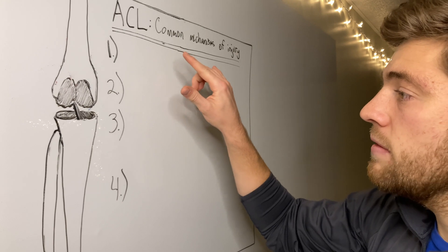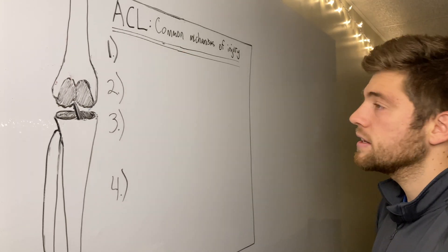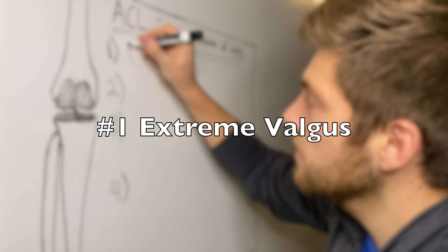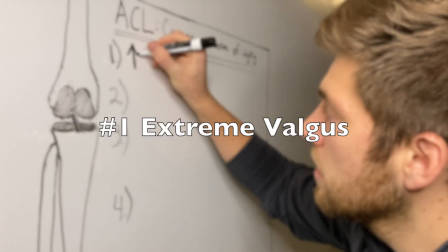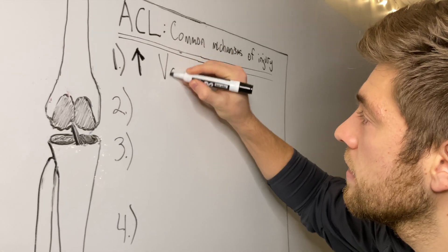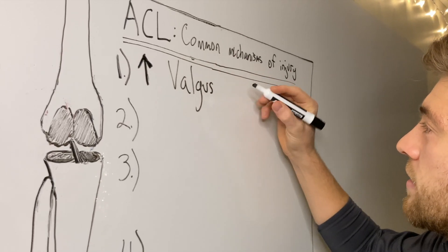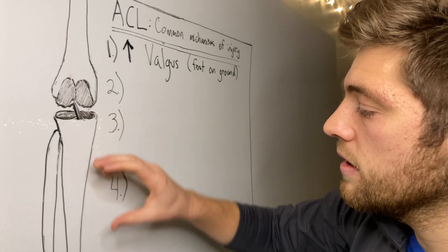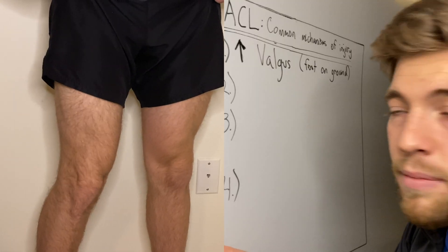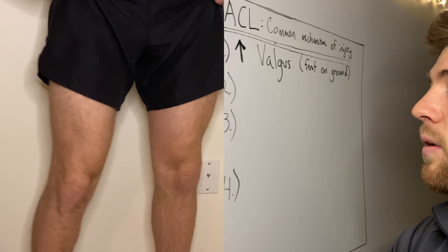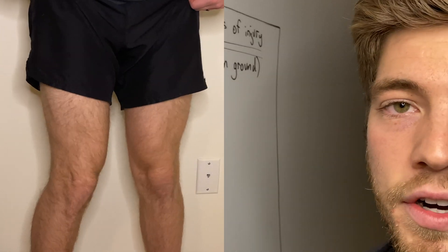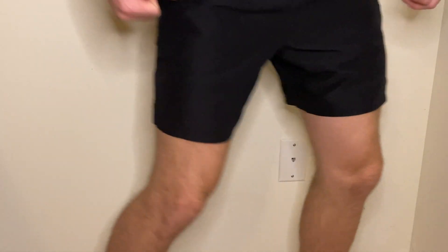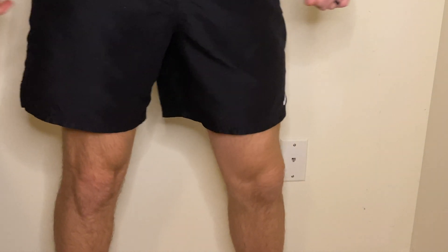So this first mechanism of injury that we're going to talk about is extreme valgus, especially when the foot is on the ground. So what does that look like? It's when the bottom part of the tibia is going to crank out. And valgus just means turned out. Varus means turned in. So when the distal part of the joint, the tibia comes out this way.